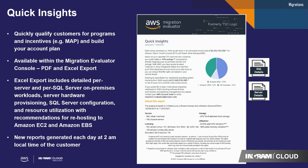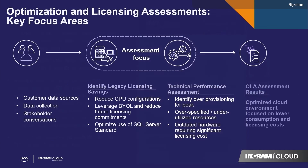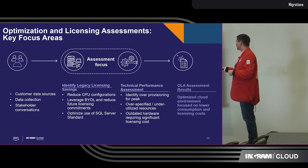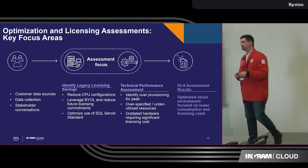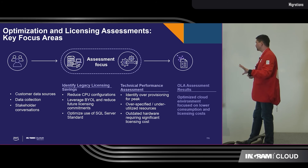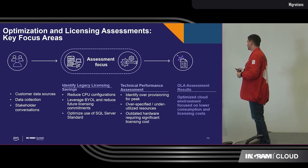Within two days it'll give you some quick insights. If you let it run for a couple more weeks it'll give you even more detailed data. New reports are generated every day at 2 a.m. This is the optimizing and licensing assessment — it's helping reduce costs, bring your own configurations, bring your own license to reduce costs. Technical performance addresses over-specified, underutilized resources, optimizing and then providing those results.